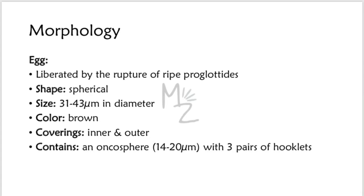Let's talk about eggs first. An egg is liberated by the rupture of ripe proglottids. The shape of the egg is spherical, about 31 to 43 micrometers in diameter. It is brown in color and has two coverings — one inner and one outer. Inside these coverings it has an oncosphere that is about 14 to 20 micrometers in length, with three pairs of hooklets.